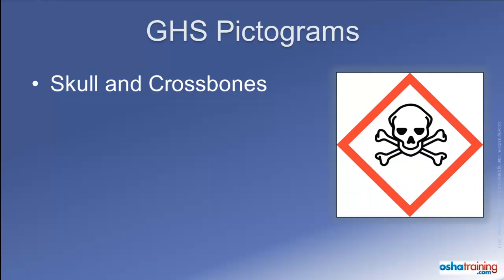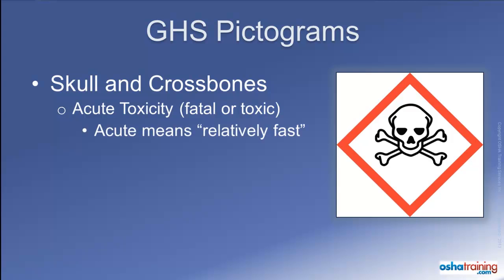The skull and crossbones pictogram identifies chemicals and products that present an acute toxicity hazard. The toxic effects of overexposure to these poisonous products could even be fatal in the right doses. Acute means the effects happen relatively quickly, as opposed to over a long period of time, which leads us to the next pictogram.